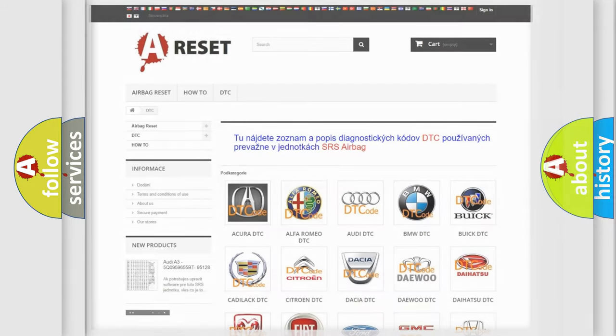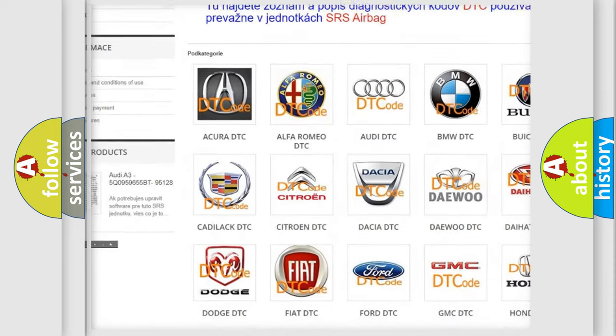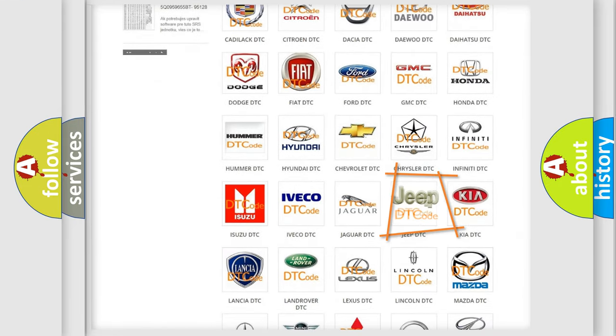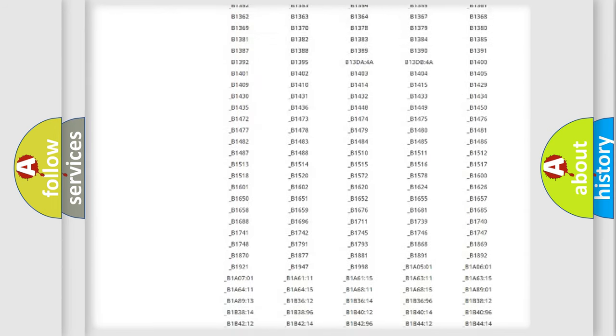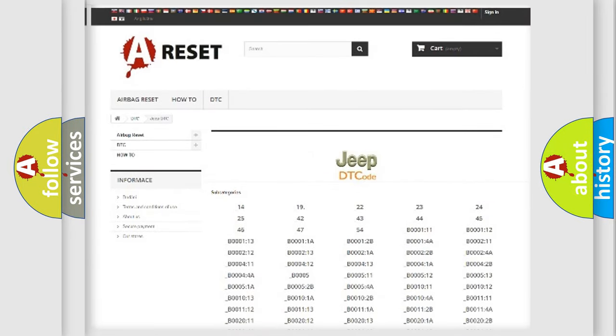Our website airbagreset.sk produces useful videos for you. You do not have to go through the OBD2 protocol anymore to know how to troubleshoot any car breakdown. You will find all the diagnostic codes that can be diagnosed in Jeep vehicles, and also many other useful things.